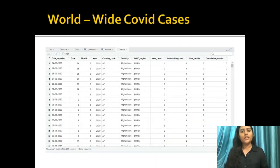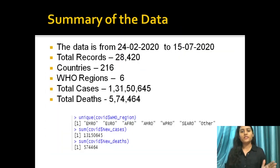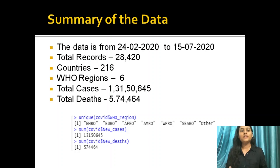For the worldwide COVID-19 dataset, we have data from February 4, 2020 to July 15, 2020. This dataset contains 28,420 total records covering 216 countries and 6 WHO regions. The total cases recorded are 13,150,645, and total deaths are approximately 574,000 in that period.